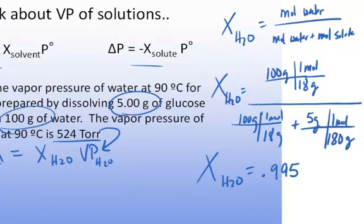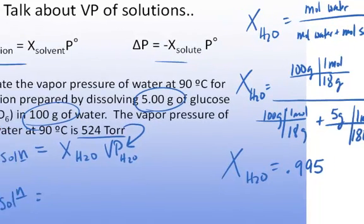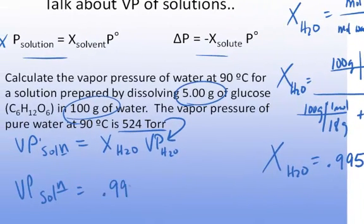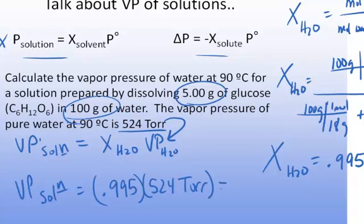So then to calculate the vapor pressure of the solution, you simply plug in the mole fraction, 0.995, times the vapor pressure of the pure solvent, which is 524 torr, and that equals 521 torr. It has been lowered or depressed.